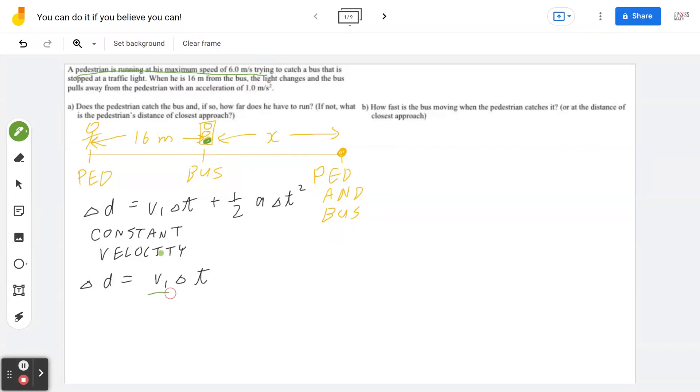6 meters per second, not 6 meters per second square. And of course, what does that really mean? Well, the pedestrian is traveling from here all the way to here. So the total distance or displacement is going to be 16 plus x. In terms of the initial velocity, it's going to be 6 meters per second or 6 times t.